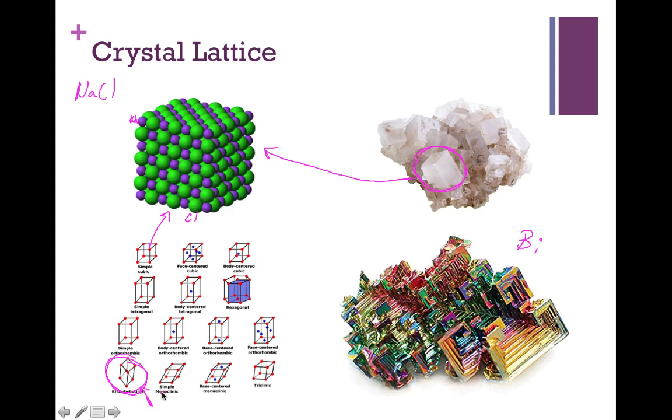So, in short, the way your atoms arrange themselves in a crystal lattice is going to determine how they eventually shape themselves as a crystal on a larger scale.